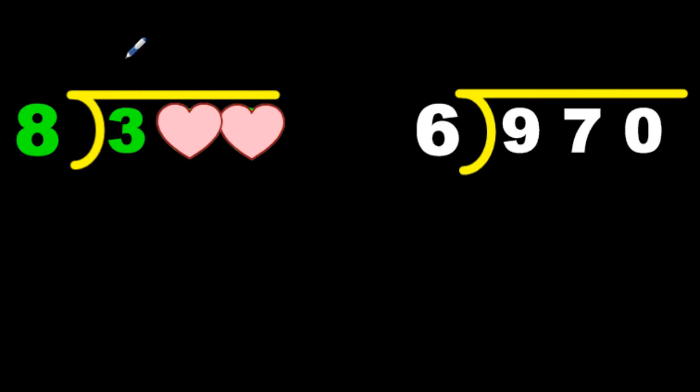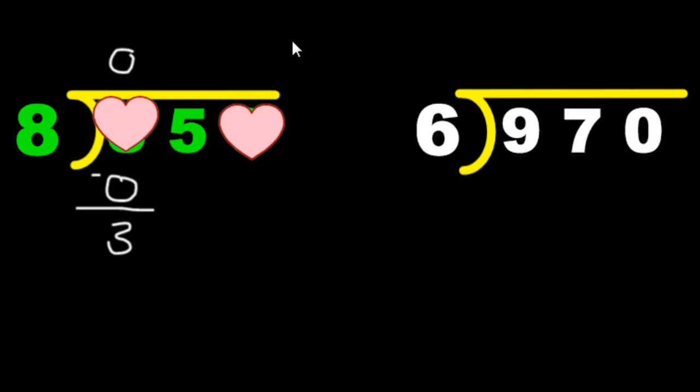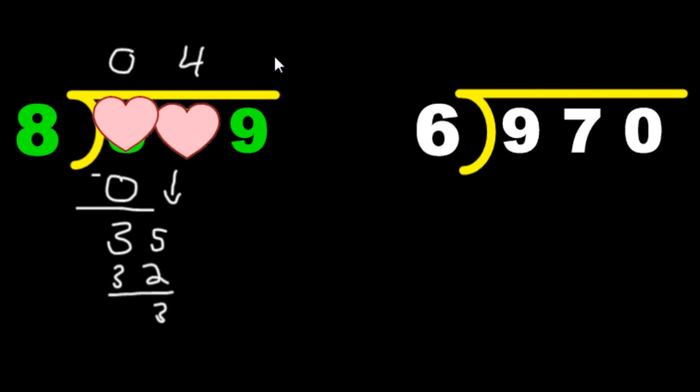8 and 3. Okay, I have to put a 0. 8 times 0. Subtract these. Move that heart over. Drop it. It seems like a lot of steps, but once you get the hang of this, it's a piece of cake. Now we've got 8 and 35. Okay, let's see: 8 times 2, 8 times 3 is 24, 8 times 4 is 32. I'm going to put 4. Oh, that is so close, without going over. Now I'm going to get 3 left over. Let's move this guy over here.